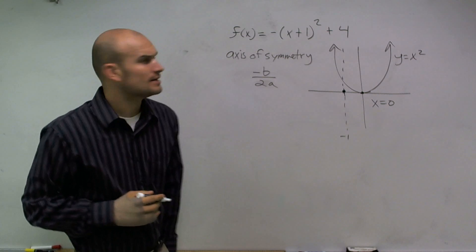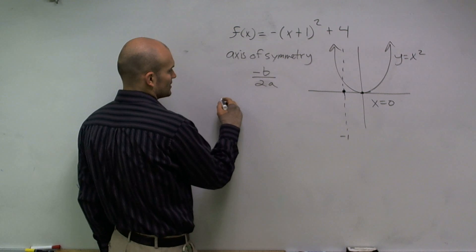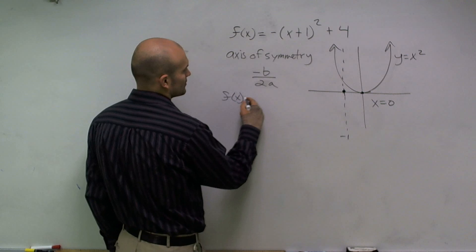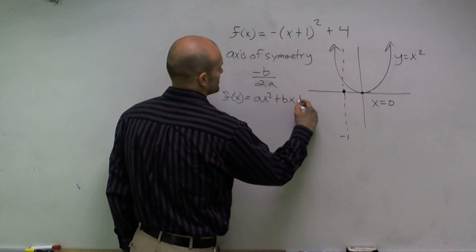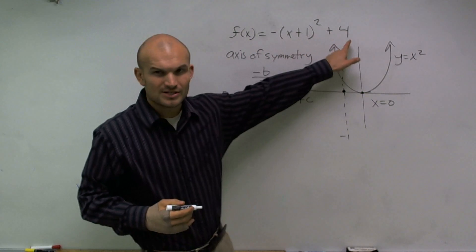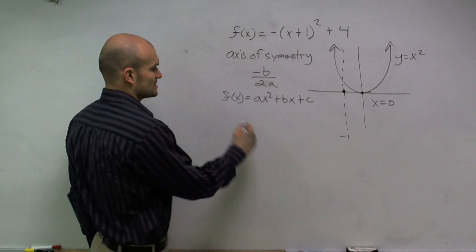And where am I getting this a and b? Well, remember, every quadratic can be written in the form of ax squared plus bx plus c. So therefore, this equation is not written in ax squared plus bx plus c format, but I can rewrite it in that format.